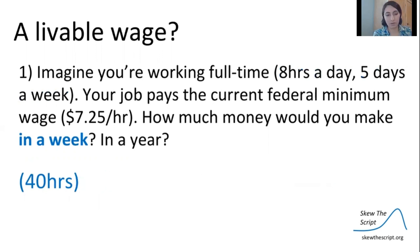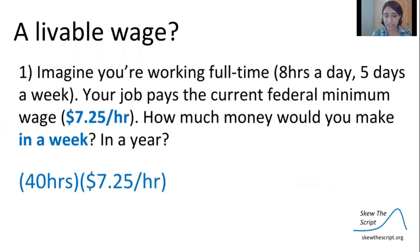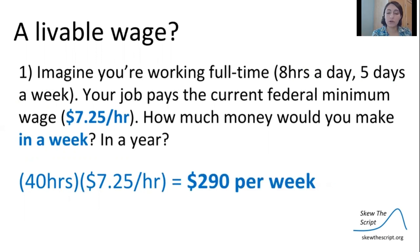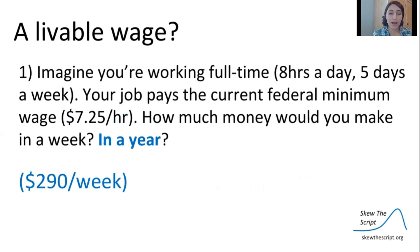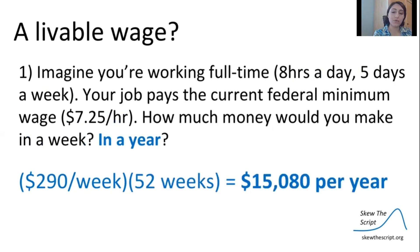If we take that 40 hours per week and multiply it by our $7.25 per hour, we can figure out how much money we're going to make in the week. We can see that we're going to end up making $290 each week. If we take that and figure out what we're going to make in a year, we take that $290 per week and multiply it by 52 weeks in a year, and we would see that we would be making $15,080 per year — just over $15,000.